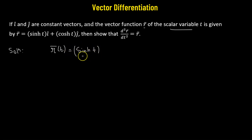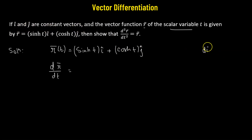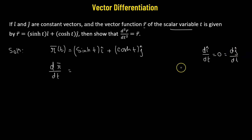The vector function r(t) is given by sinh(t) as the x-component, plus cosh(t) as the y-component. Now we'll take the derivative with respect to t on both sides. Since i-cap and j-cap are constant vectors, the derivative of i-cap with respect to t is zero, and similarly the derivative of j-cap with respect to t is also zero.